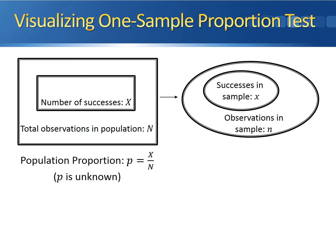However, since we can't sample every single observation in the population, P is unknown. What we do instead is take a sample from the larger population. Our sample is denoted by the larger oval, and the number of observations in that sample is denoted by lowercase n. The total number of successes — observations that satisfy the characteristic we're looking for — is going to be x, contained within the smaller oval. Our sample proportion is denoted by P-hat, calculated by taking little x divided by little n.